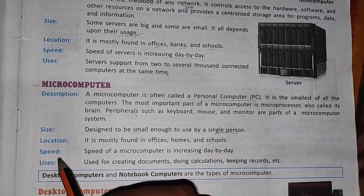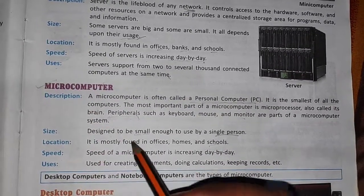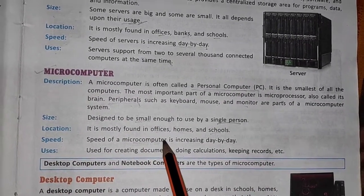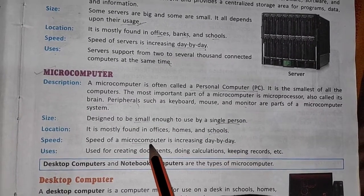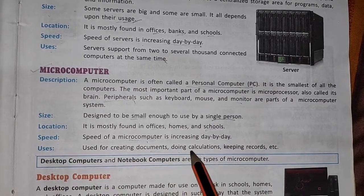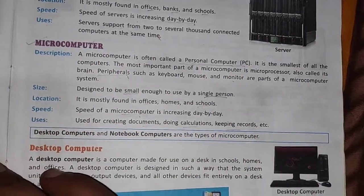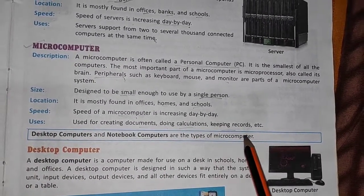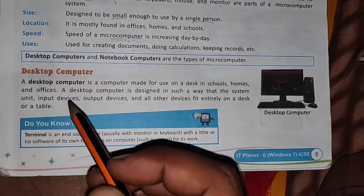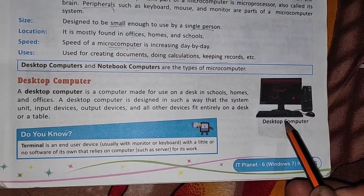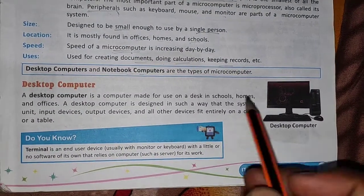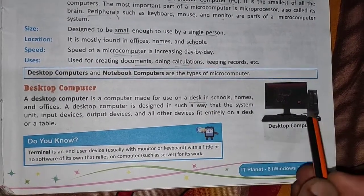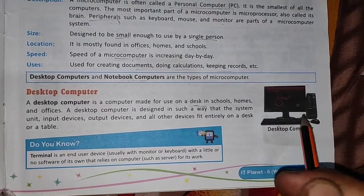Micro computers also have peripherals — input and output devices like keyboard, mouse, and monitor. The size is very small so one person can easily handle it and place it on a desk or in their lap. These computers are used in offices, homes, and schools. The speed of the microprocessor is increasing day by day with each new processor launch. Desktop computers and notebook computers — laptops — are micro computers. The desktop computer is especially for home users.